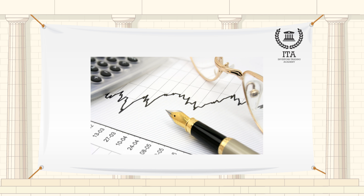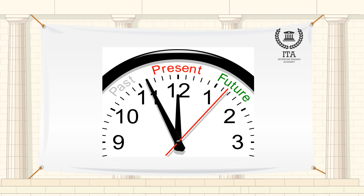Gann Angles are a popular analysis and trading tool that are used to measure key elements such as pattern, price, and time. The often debated topic of discussion among technical analysts is that the past, the present, and the future all exist at the same time on a Gann Angle.